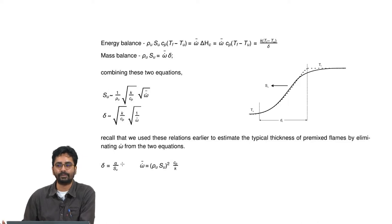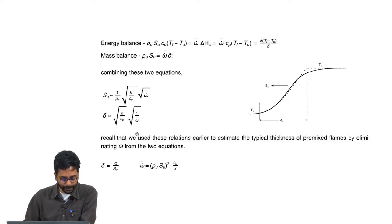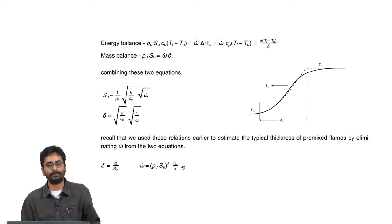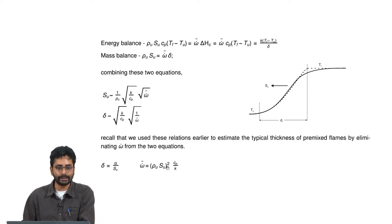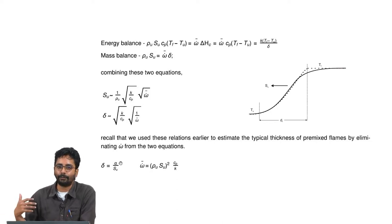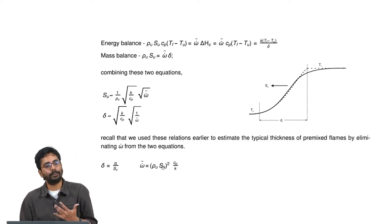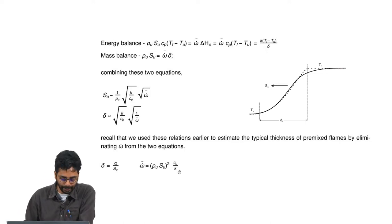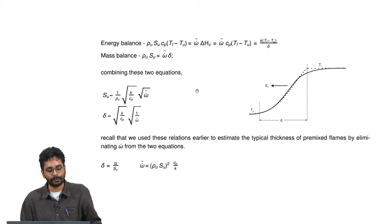This is the form for the reaction rate used earlier to estimate δ, and it is also the equation that emphasizes it is much easier to measure flame speed than reaction rate. Flame speed has a direct relationship to the reaction rate, and relative reactivity of mixtures can be estimated from this relationship, which follows from a simple energy and mass balance for the flame zone.